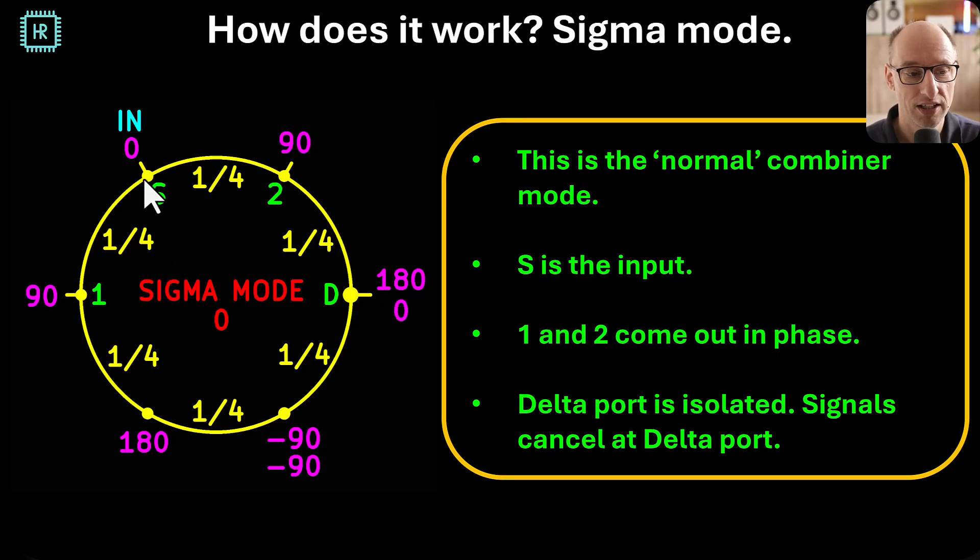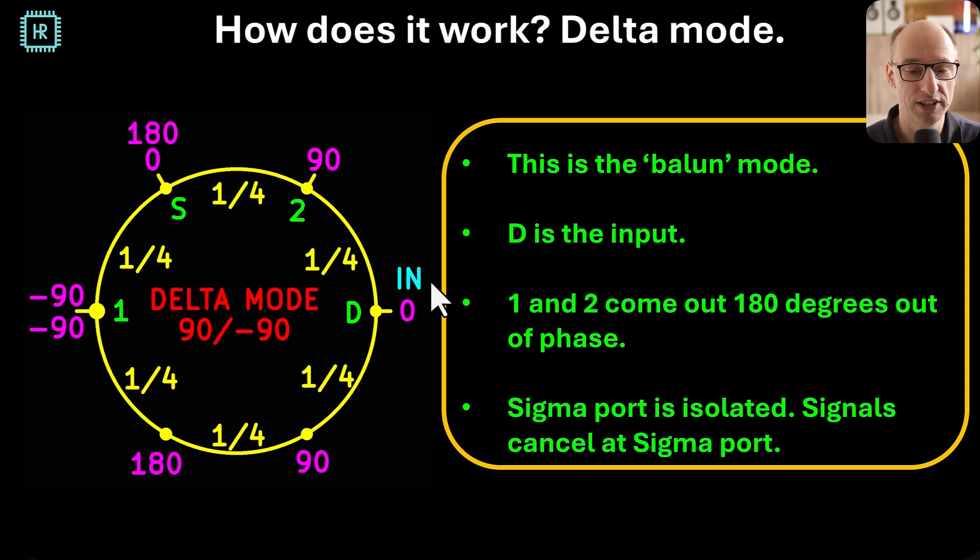So you go from 90 to 180, from 180 to minus 90. 270 is basically the same as minus 90, and then to zero. So what you see is that the signal cancels out here, and the signal encounters one port via this way and one loaded port via this way, so the amplitude is also equal. So the signal completely cancels out here, and you can see that port 1 and 2 are in phase. So this is a normal combiner operation.